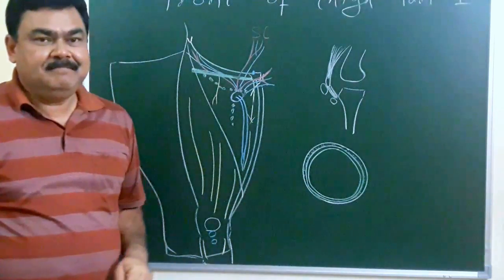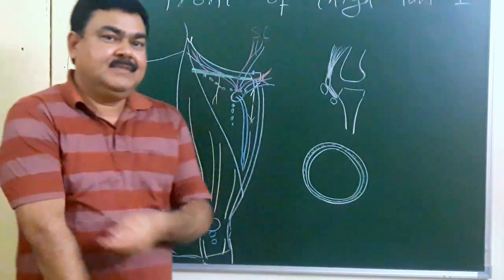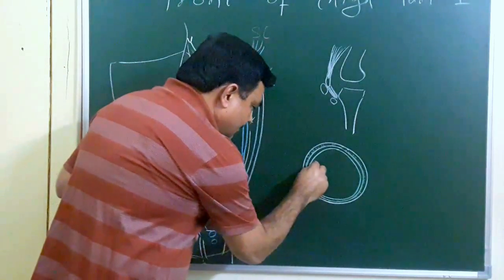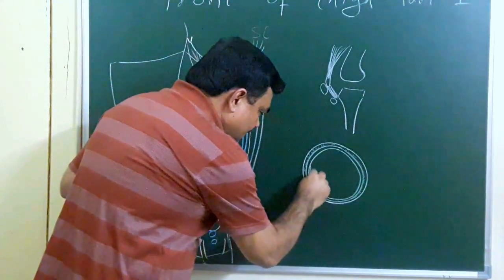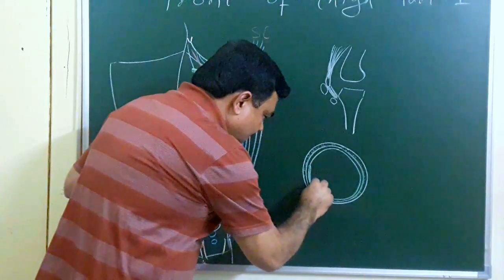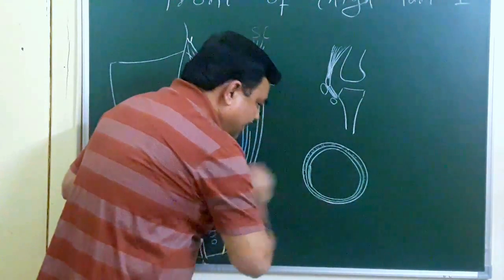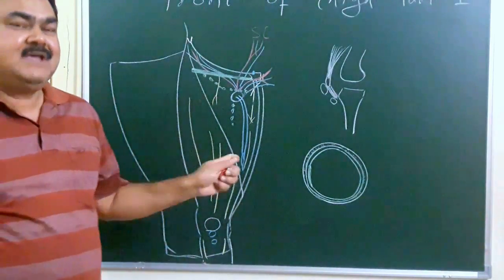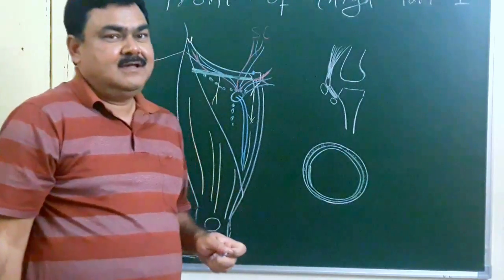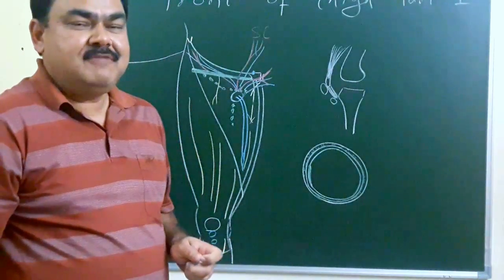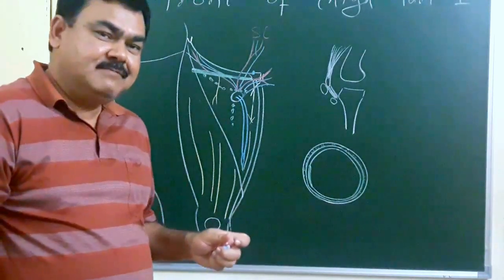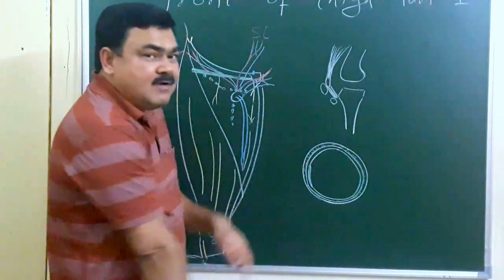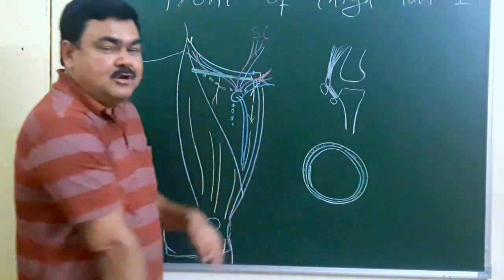The deep fascia modifies at several places. It modifies on the lateral side to form a band known as the iliotibial tract. The deep fascia of the thigh is a sleeve-like structure known as the fascia lata. Laterally it becomes thickened to form the iliotibial tract.